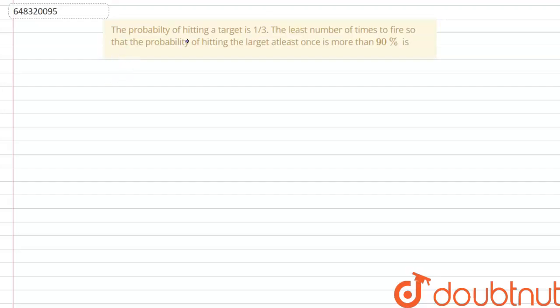The question says that the probability of hitting a target is 1 by 3. The least number of times to fire so that the probability of hitting the target at least once is more than 90% is.